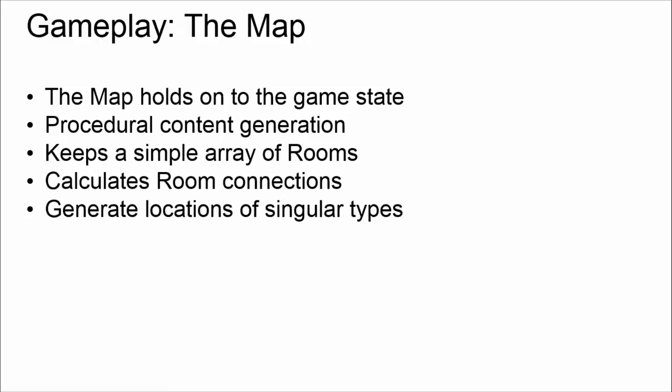The map class uses a very simple form of procedural content generation — something you've heard of recently in other games. Things like Minecraft use procedural content generation to build a randomized map, guessing where hills, valleys, trees, and water are. We're doing the same thing, just a very simplified version. The map keeps a simple flat array of rooms. We pre-calculate connections so each room knows what its neighbors are. We generate locations for singular types — like where's the weapon? We just keep an index of what room the weapon is in rather than a weapon class.